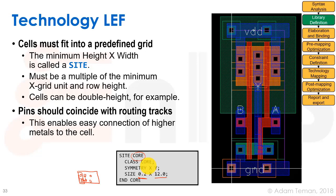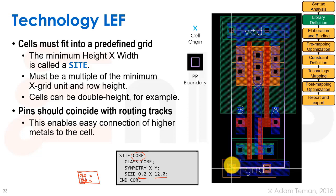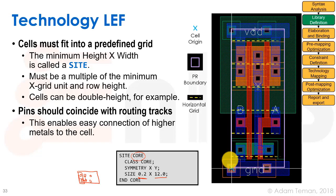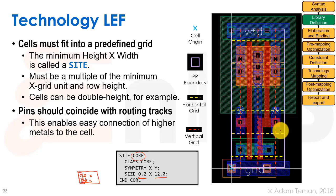Another thing is that the pins should coincide with the routing track, enabling easy connection of higher level layers by just dropping a via. To summarize for our standard cell: the cell origin is at 0, 0. We have the PR boundary defining width and height. We have the horizontal grid where metal one tracks go, and the vertical grid where metal two tracks go, plus higher level tracks. We want our pins to fall on the middle of these vertical tracks so we can just drop a via and it connects nicely.